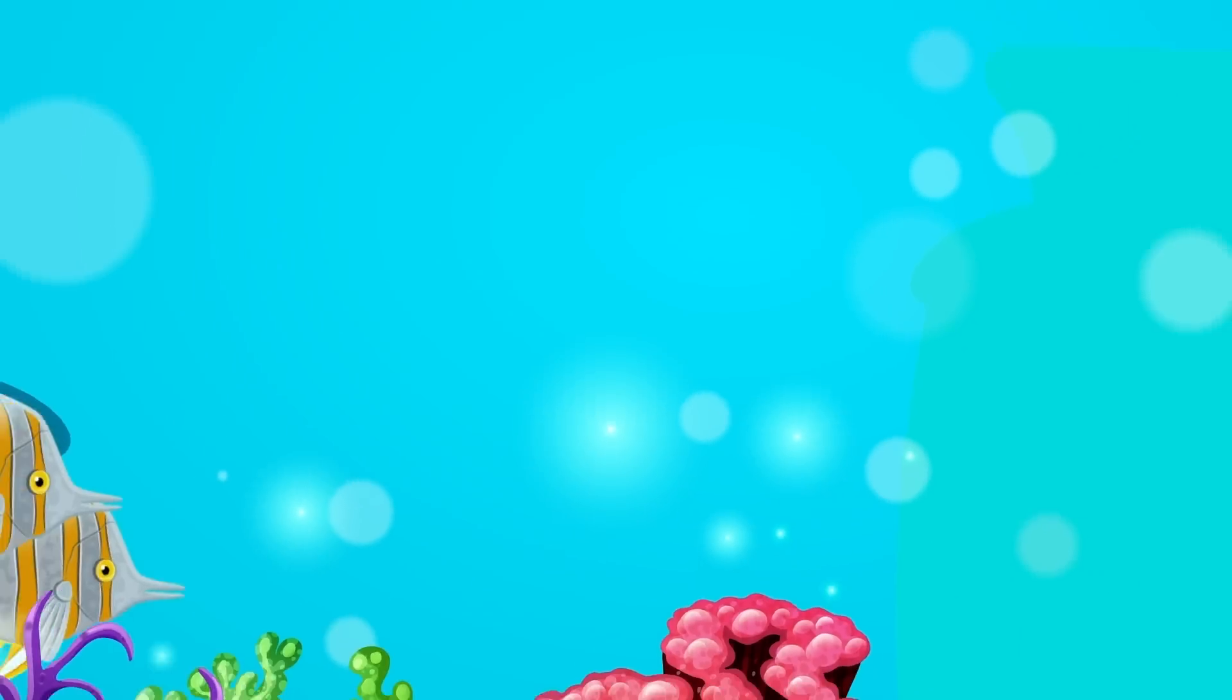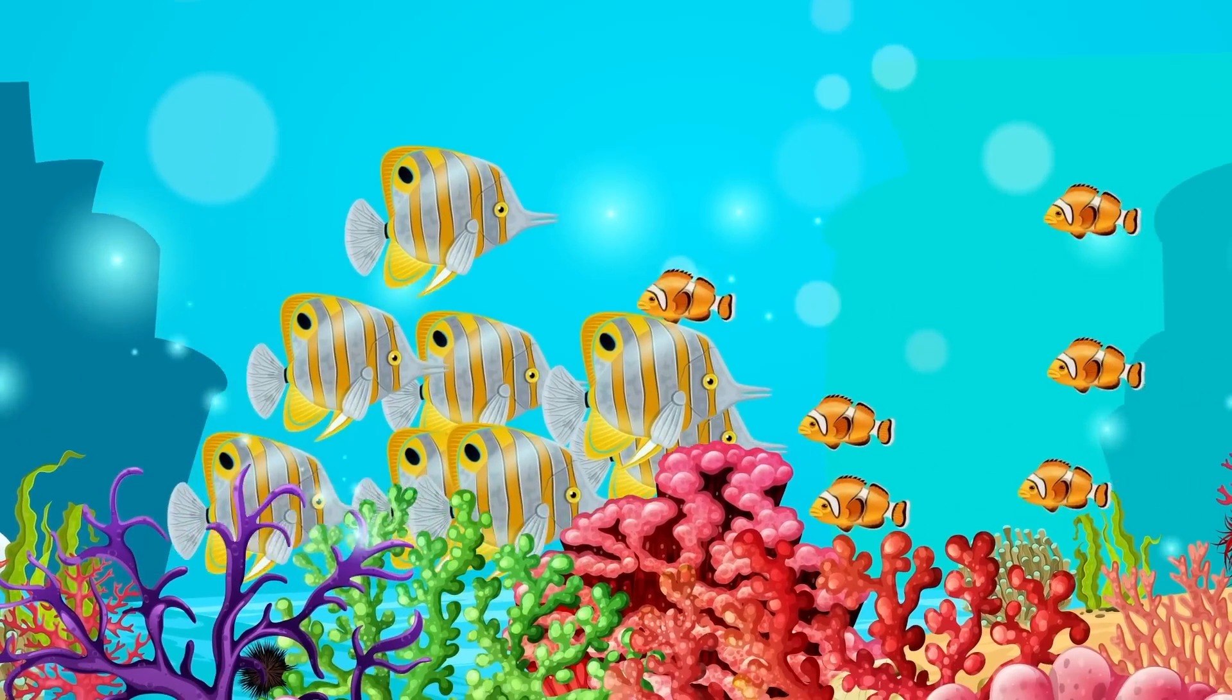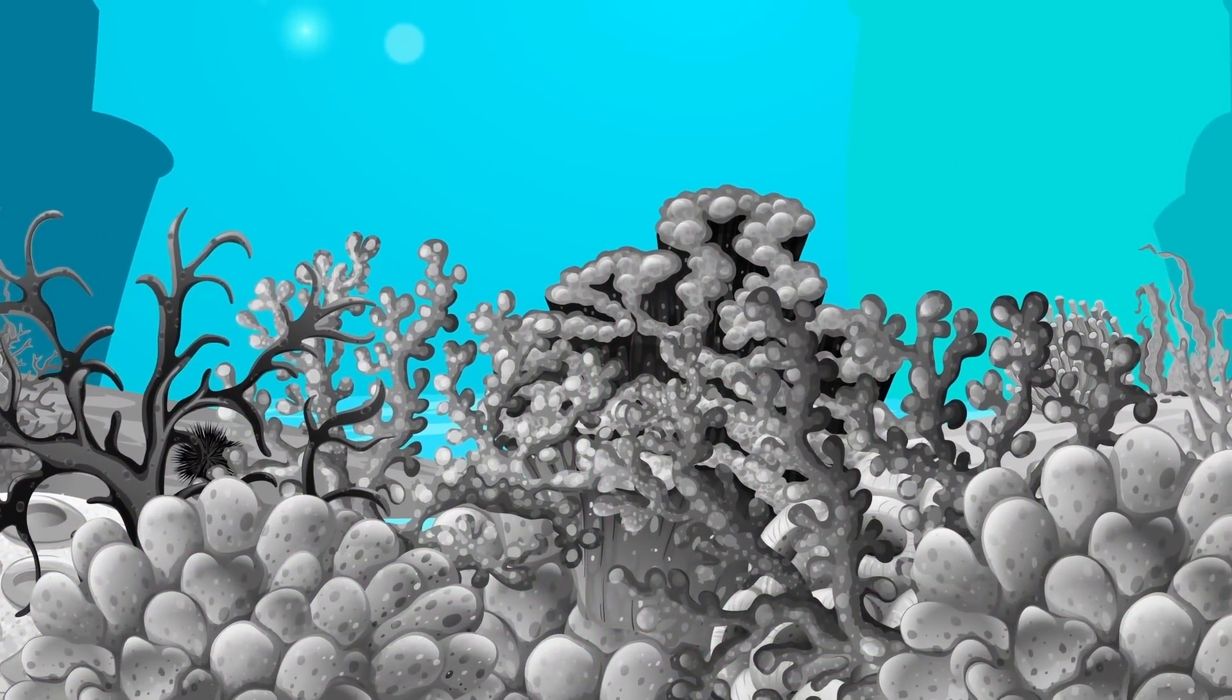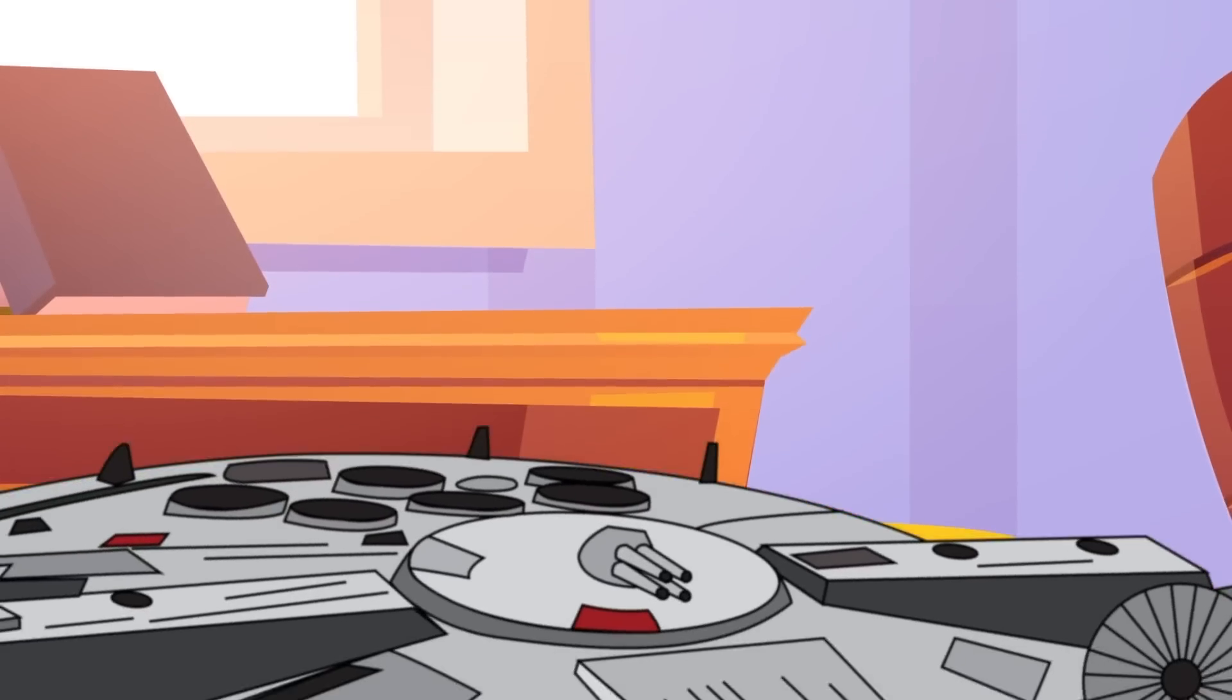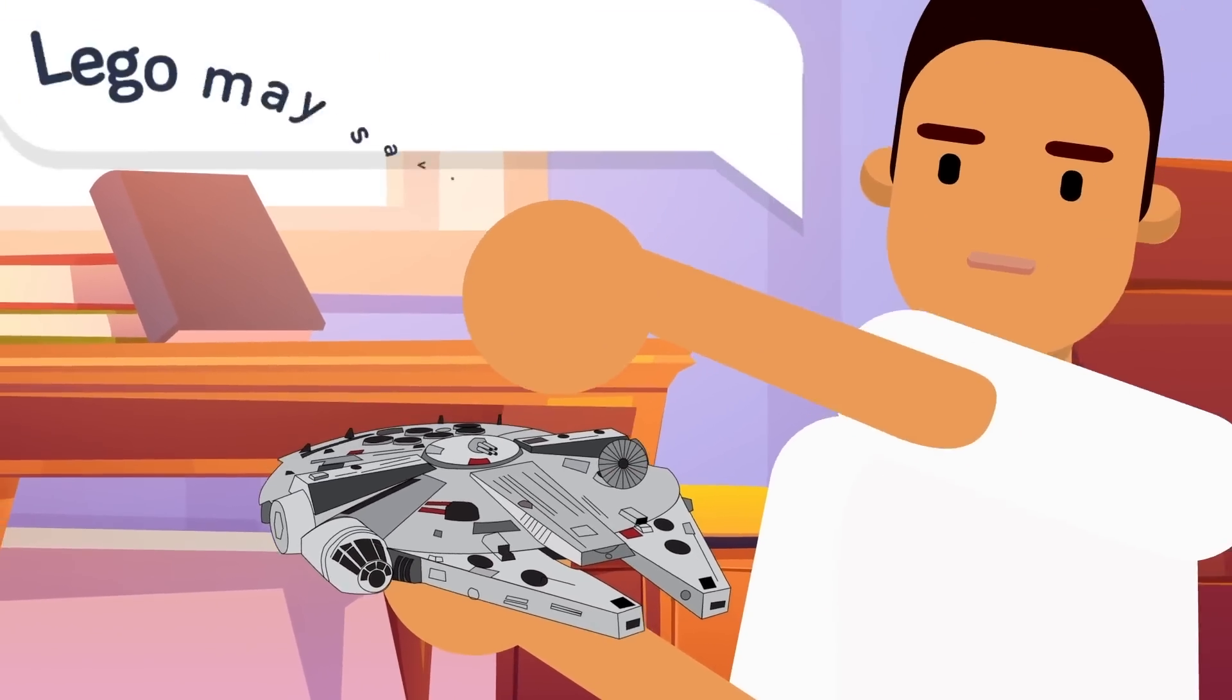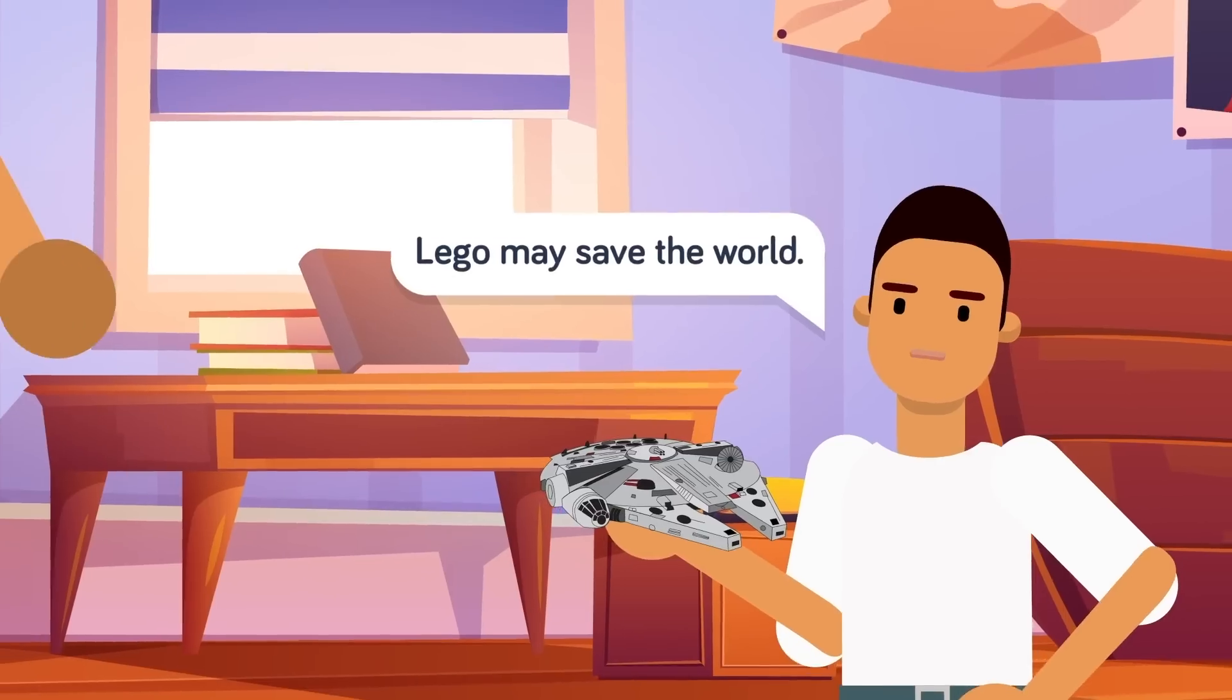Coral reefs around the world are dying, and with them, countless fish species that threaten the very prosperity of humanity itself. But the key to saving our oceans might be Legos. That's right, those tiny blocks that snap together to build a race car or the Millennium Falcon may be the answer to saving coral reefs.